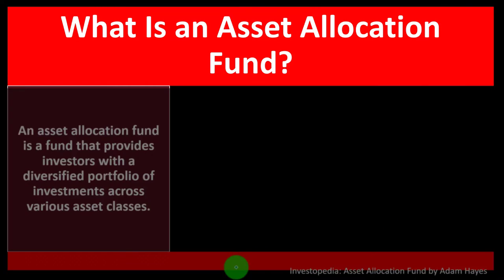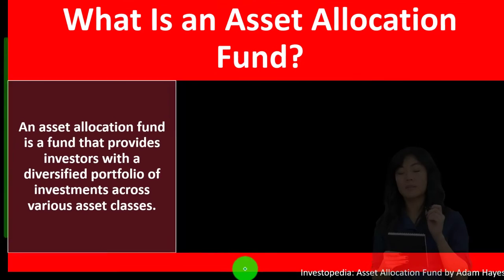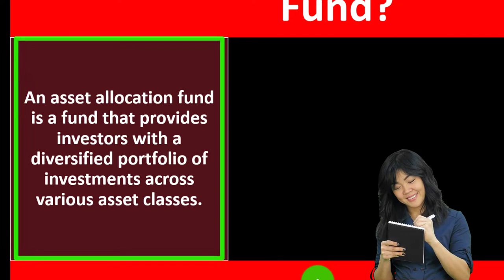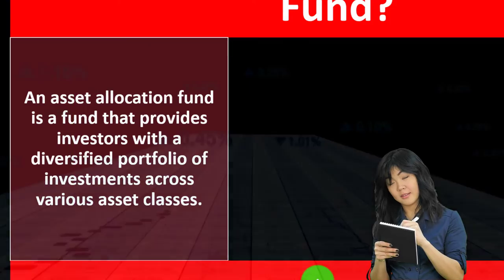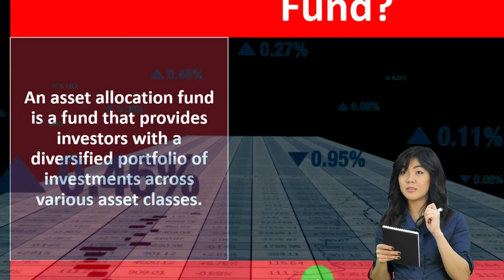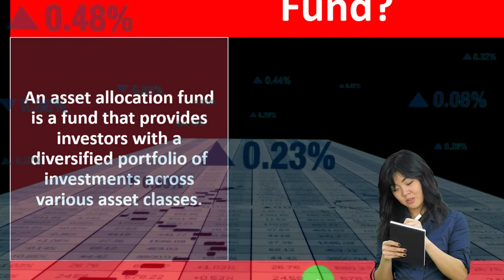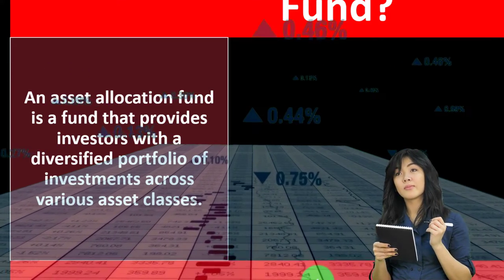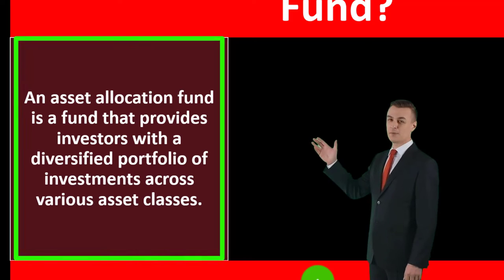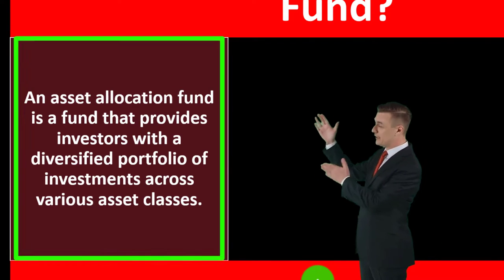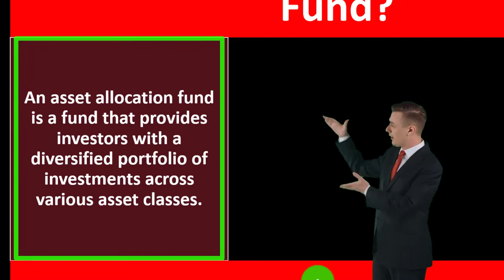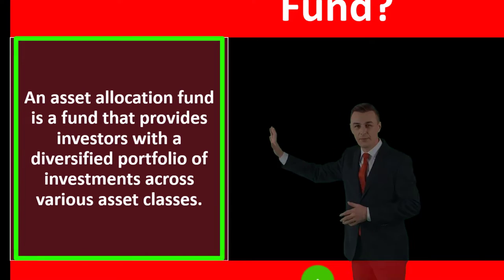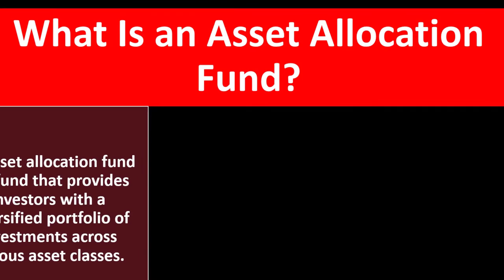Keeping that in mind, we're now asking: what is an asset allocation fund? An asset allocation fund is a fund that provides investors with a diversified portfolio of investments across various asset classes. As an individual investor often investing for retirement, you might consider investing in individual stocks and bonds, but it's hard to diversify that way. So instead, you might use a retirement mutual fund or ETF, which pools your resources with other investors so the fund manager can invest across multiple investments, helping you diversify.